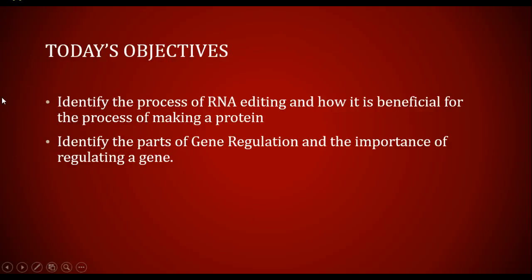Today's objectives were to take a look at the process of RNA editing. RNA editing happens when DNA is split open and we're making a messenger RNA copy. That copy has two parts: it has introns and exons. Introns are fluff — nucleotides not needed to make the protein. The exons are what we need, so we cut those introns out, recombine the exons, and then take them out into the cytoplasm where we can start translation.